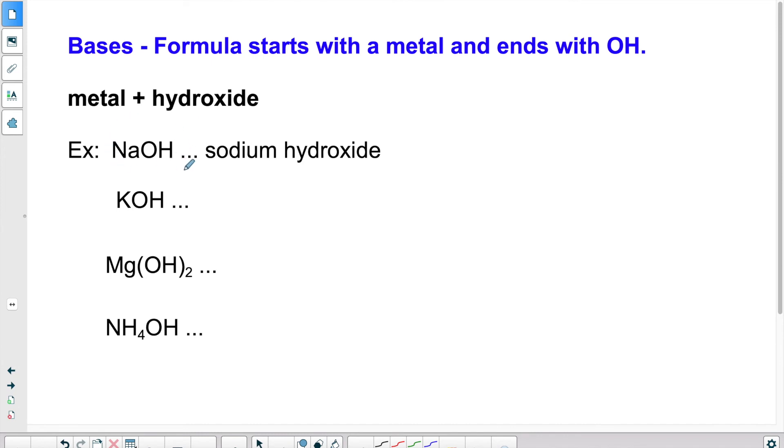NaOH would be, Na is sodium and OH is hydroxide. KOH, K is potassium and OH would be hydroxide. So if I wrote it, we'd say potassium hydroxide.